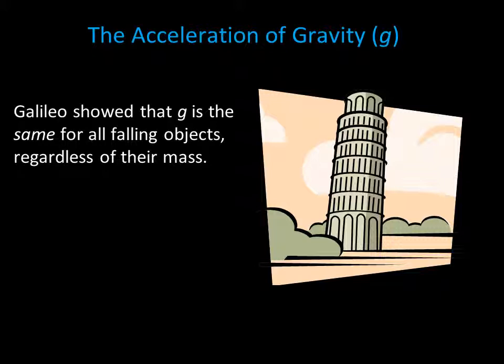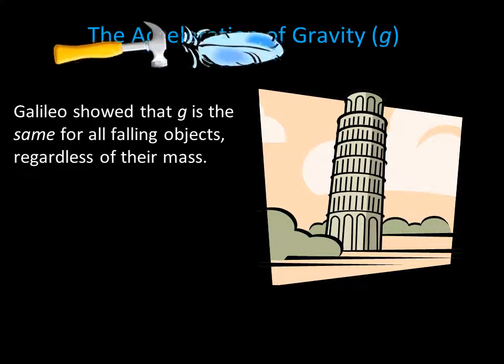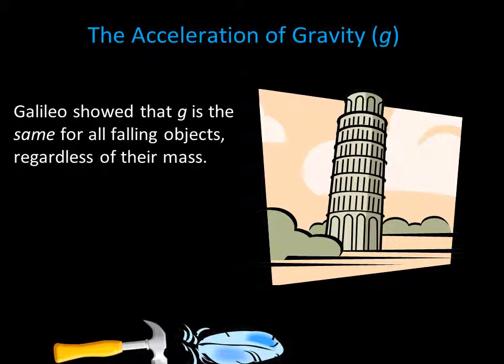This fact may be surprising because it seems to contradict everyday experience. A feather, for example, floats gently to the ground while a hammer plummets. But it's air resistance that causes this difference in acceleration. If you drop a feather and a hammer on the moon where there is no air resistance, they would fall at exactly the same rate.